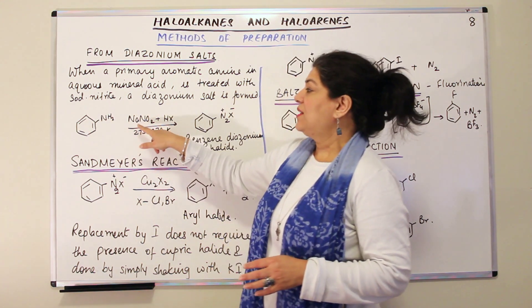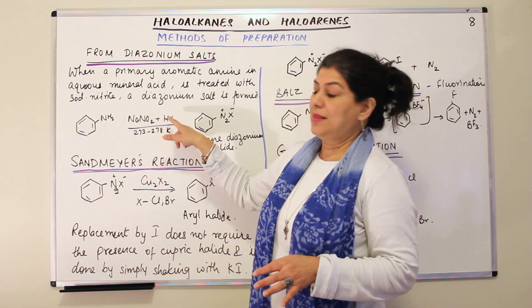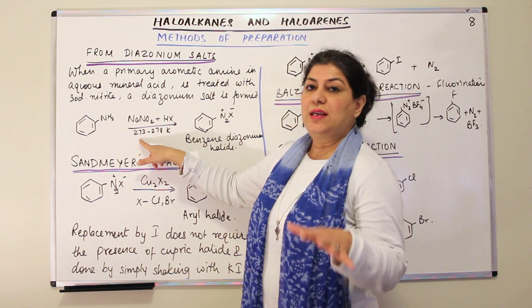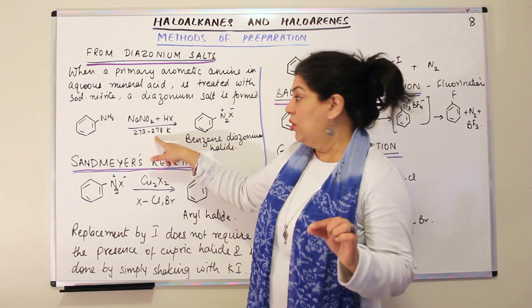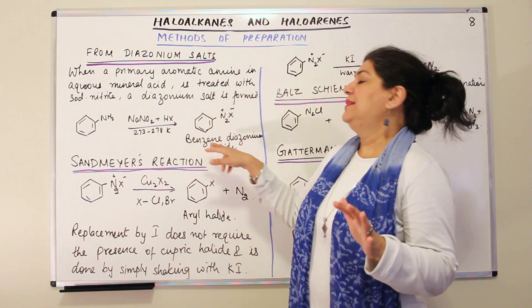For example, you have aniline here. You react it with NaNO2 and HX is the mineral acid at a temperature of 273 to 278 Kelvin, which is pretty low, and you get a diazonium salt.